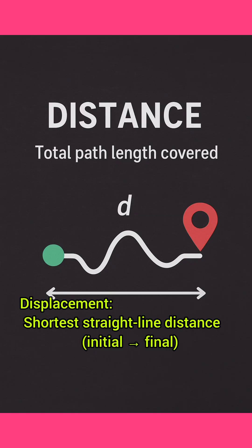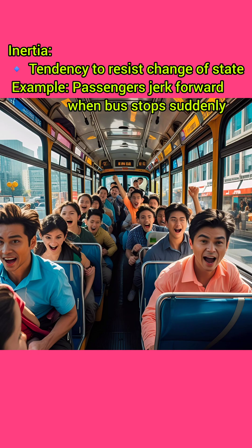Distance is the total path length travelled by a body between two points. In this image, the curved path is the distance, and displacement is the shortest distance travelled by the body. Displacement is indicated by a straight line.